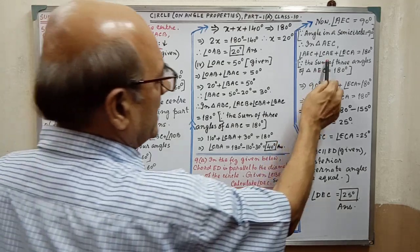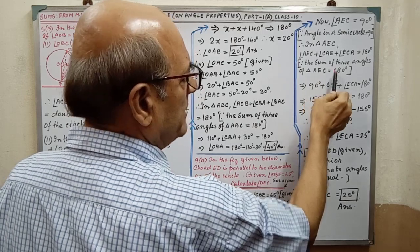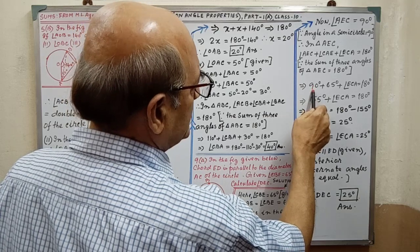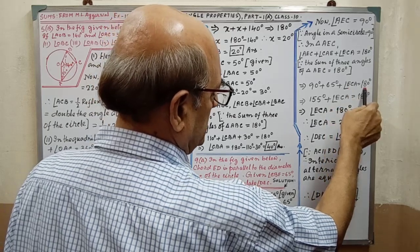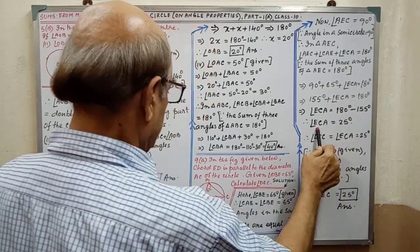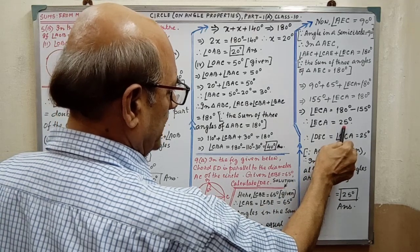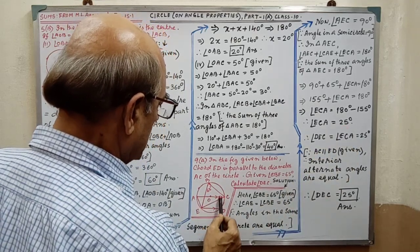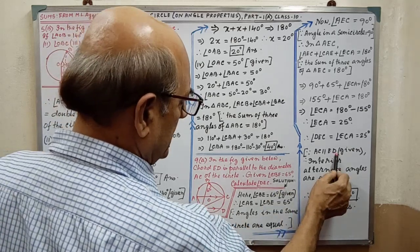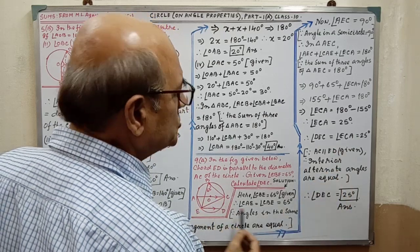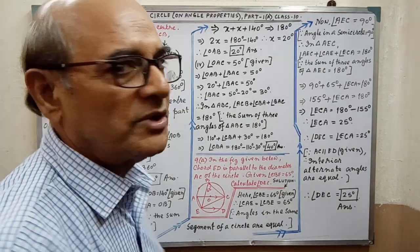In triangle AEC, the sum of the three angles is 180 degree. Angle AEC is 90 degree, angle CAE is 65 degree, so angle ECA equal to 180 degree — by calculation we are getting angle ECA equal to 25 degree. Now this angle equal to this angle, since lines AC and ED are parallel, therefore the interior opposite angles must be equal. Therefore angle DEC equal to 25 degree.